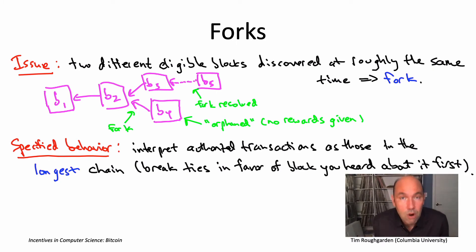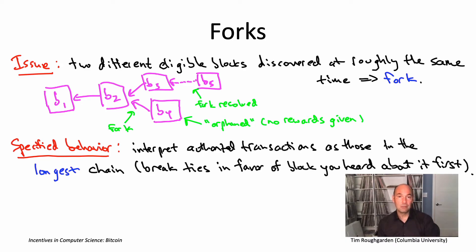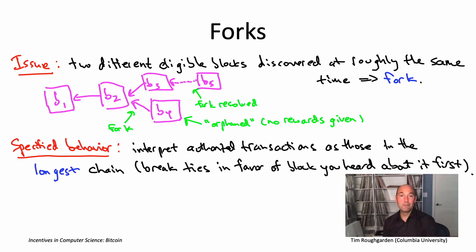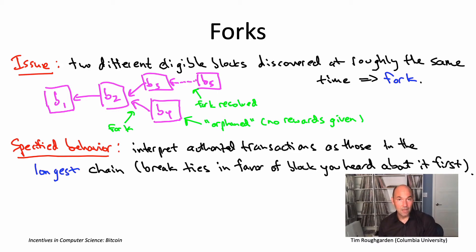This way Bitcoin works — forks show up, get resolved, blocks get orphaned, and transactions in orphaned blocks don't count — has implications for how you should use Bitcoin. Suppose you're selling something expensive, like a car, and someone pays you with a Bitcoin transaction. They say here's the transaction in the peer-to-peer network; it got added to the blockchain in block B4, so we're good — ship the car. But if you're the seller, you don't want to ship immediately, because if that transaction is in a block like B4 that winds up orphaned, you've shipped the car and the transfer of funds is no longer valid. The customer gets both the car and keeps all their Bitcoin.